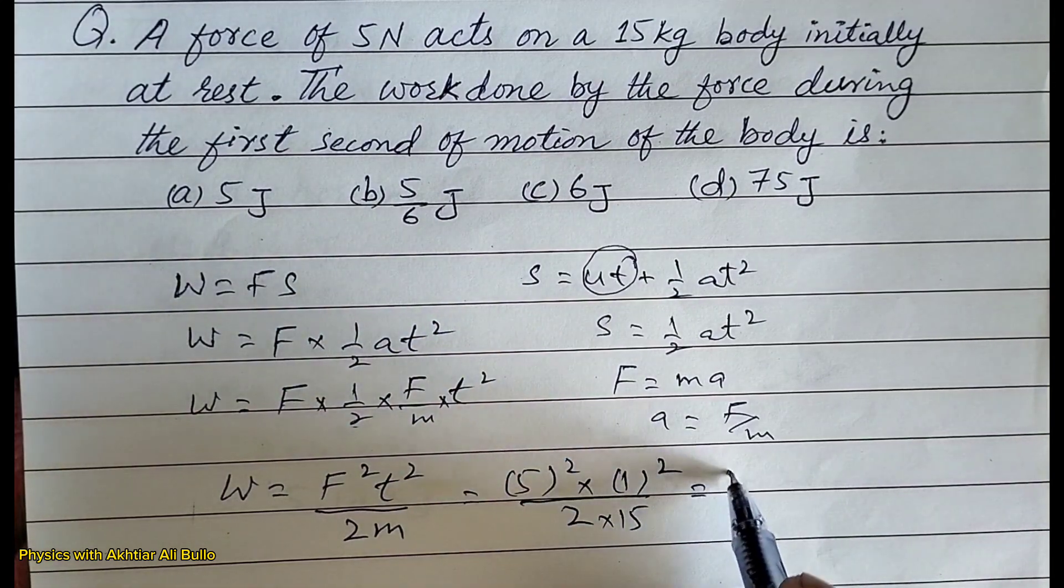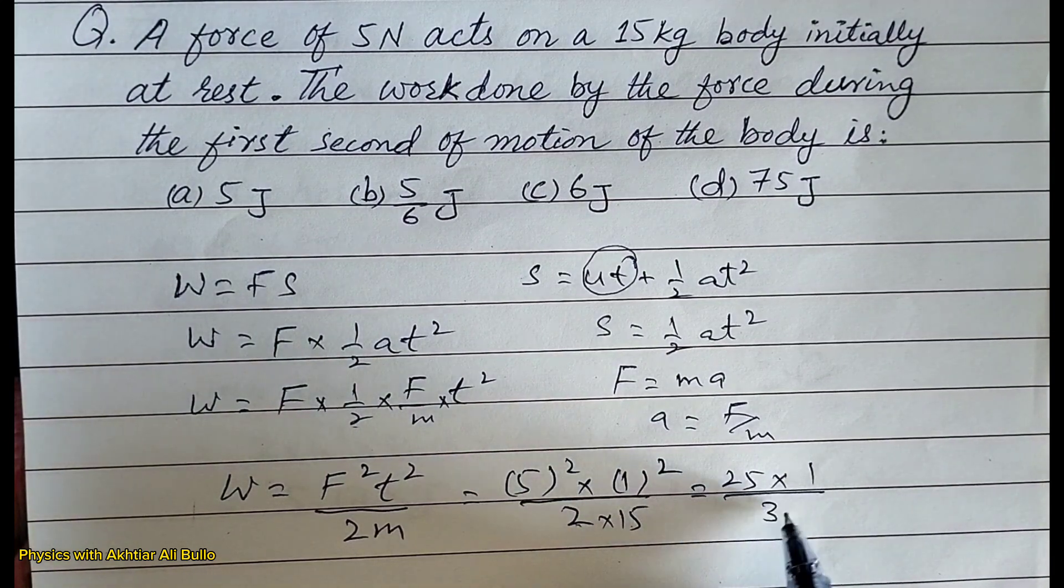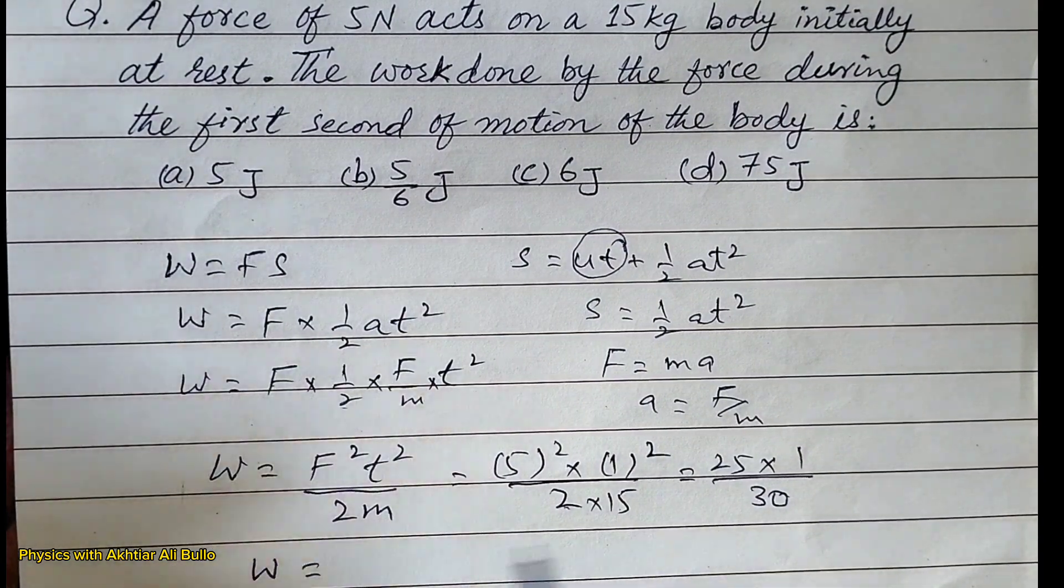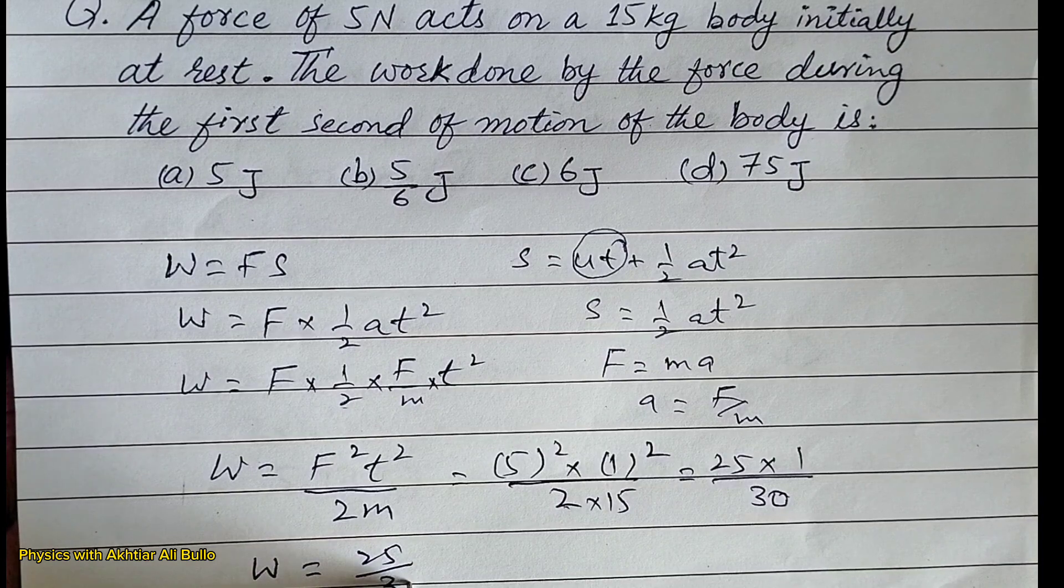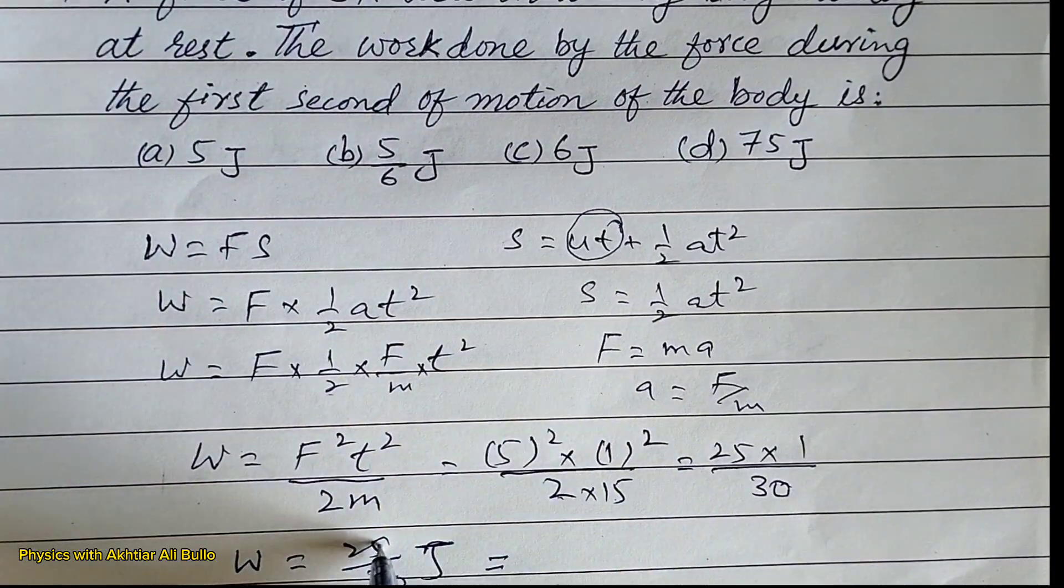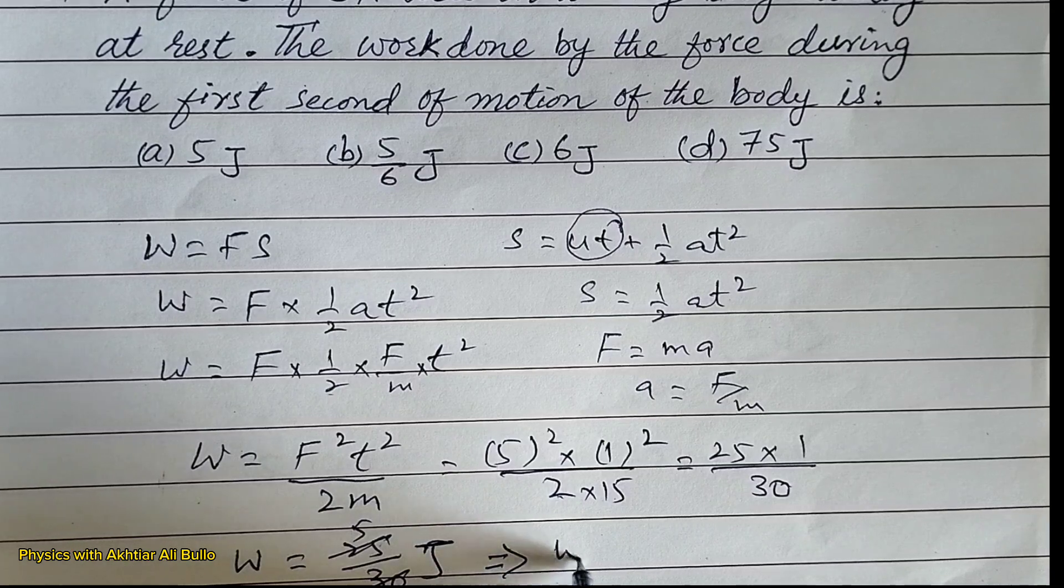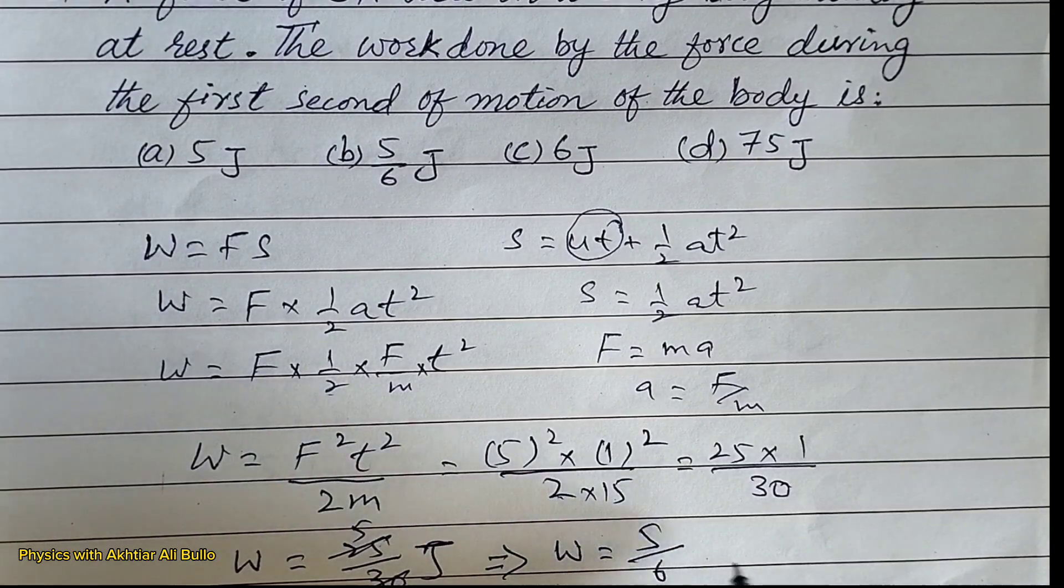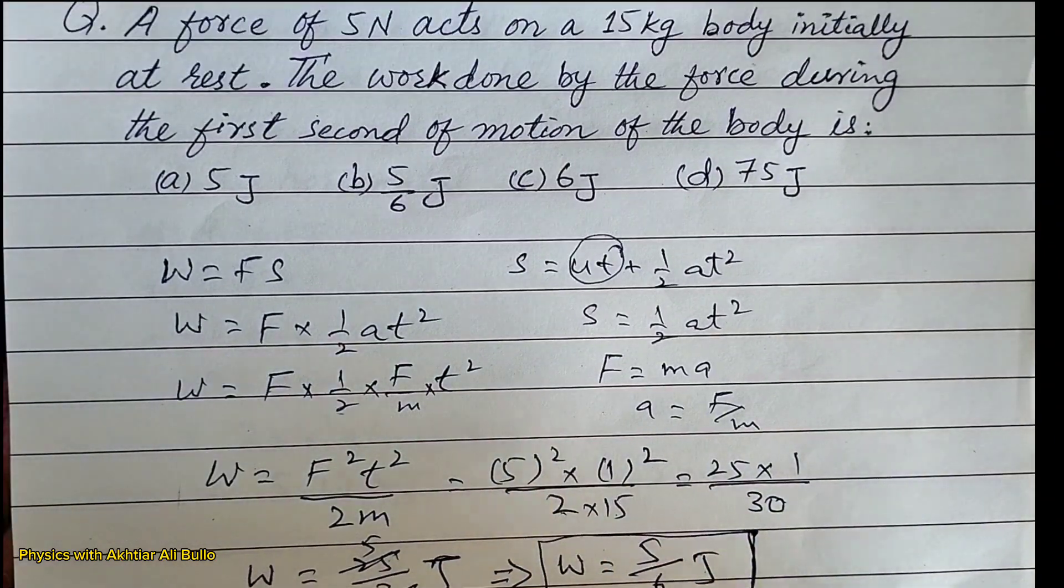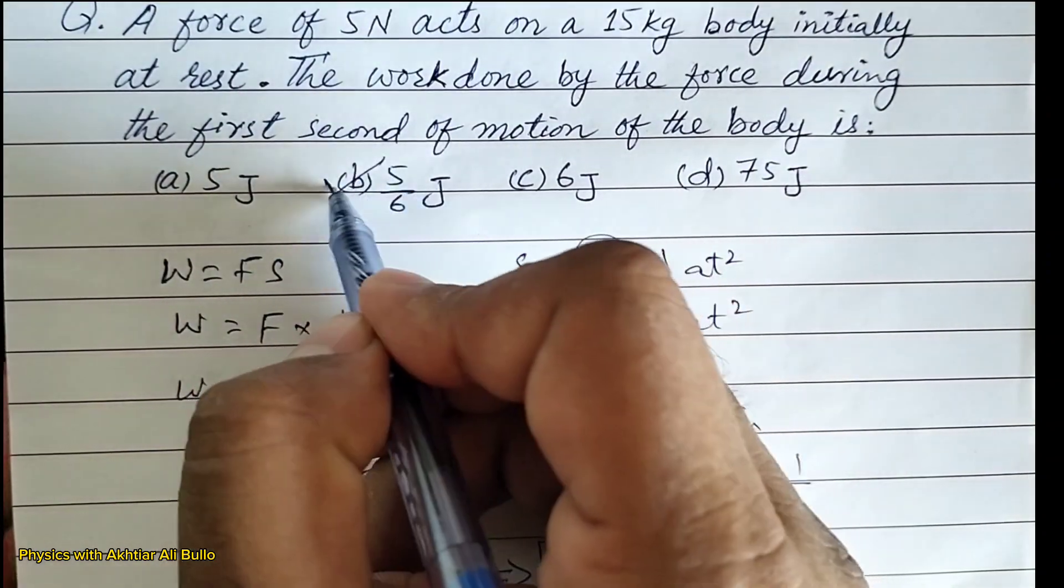The square of 5 is 25 and the square of 1 is 1, divided by 2 into 15, which is 30. So work done will be equal to 25 upon 30 joule, which equals 5 upon 6 joule. So the correct option will be 5 upon 6 joule.